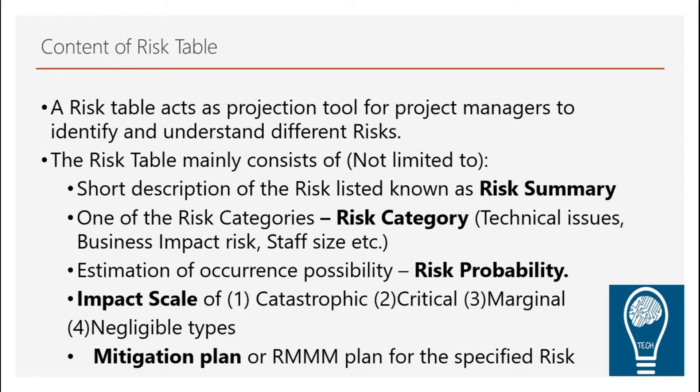We then add the impact scale. As seen in the last video, you can have high, low, or medium. The generalized version uses: catastrophic, critical, marginal, and negligible. Depending on what sort of impact the risk would have on your project development, you classify them into these categories. Finally, you define the mitigation plan — what you've planned to overcome that risk if that scenario occurs.